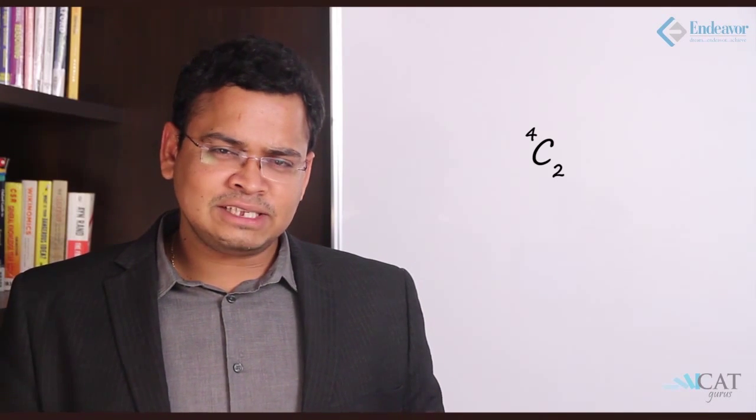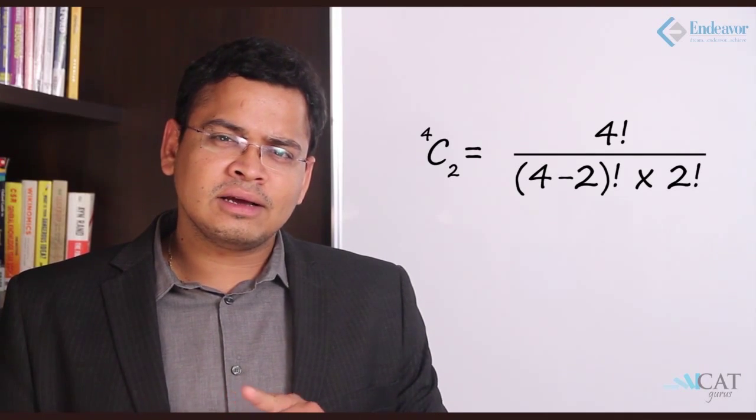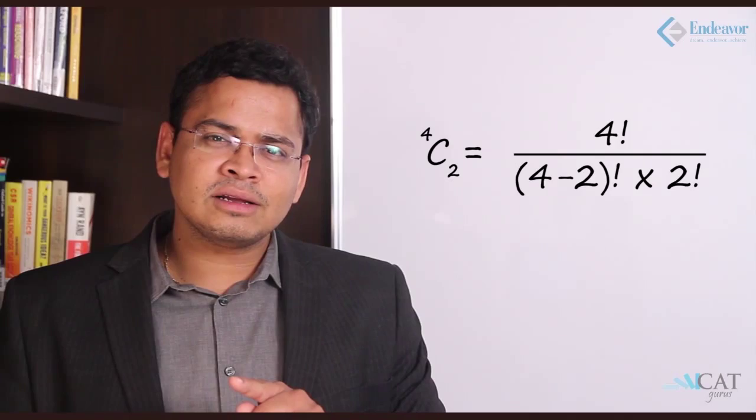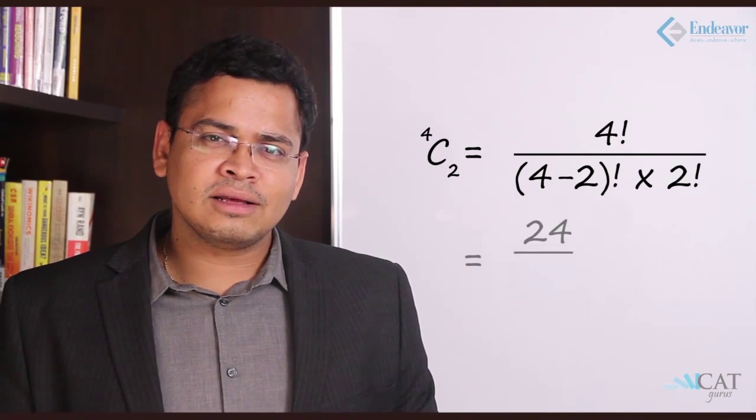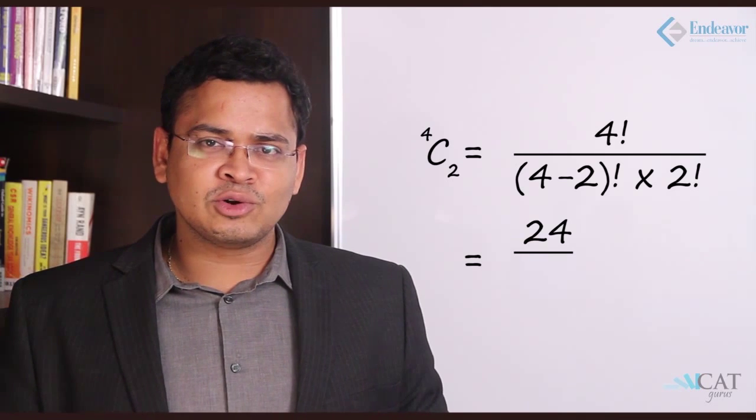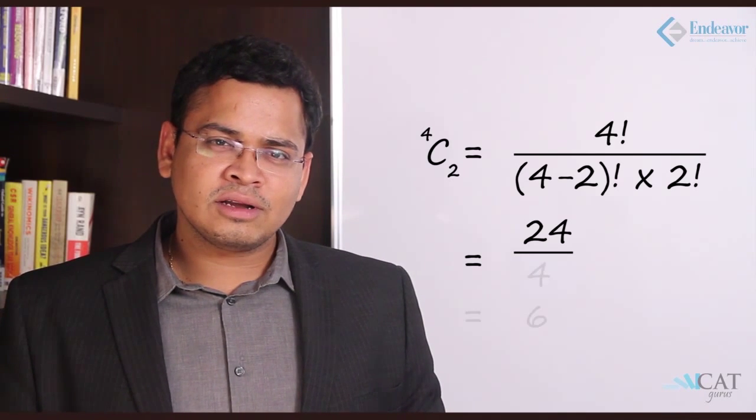Now, going back to the formula you must have learned in school: for combination, if there are four people and I have to select two to give the same marker, I apply 4C2. That is 4 factorial divided by (4 minus 2) factorial times 2 factorial. 4 factorial is 24, divided by 2 factorial times 2 factorial, which is 4 — giving us 6.